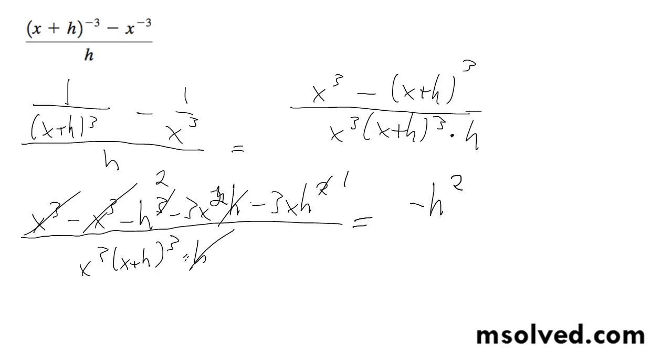negative h squared minus 3x squared minus 3x h, all over x cubed quantity x plus h cubed. That's it.